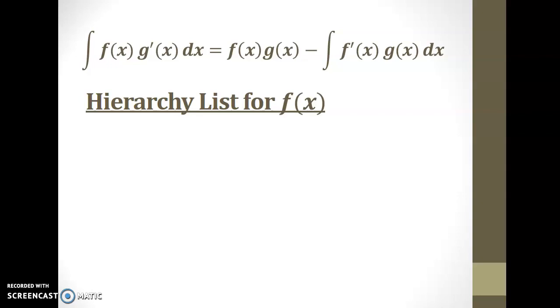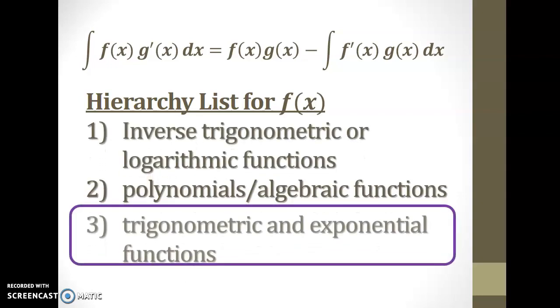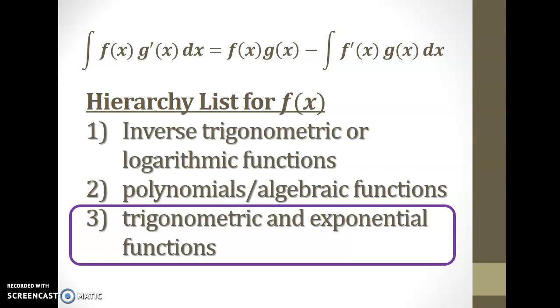How do we choose f and g prime from the onset? We have a certain hierarchy list. Inverse trig functions or logarithms come first, polynomials and algebraic functions come last, and I've put a box around trig and exponential functions because these are the cases that will cause boomerang integrals.